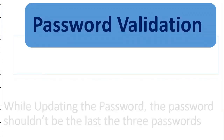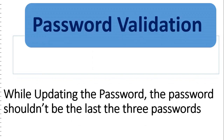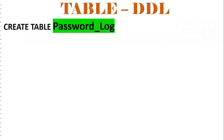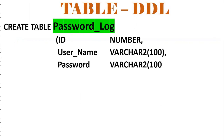The next requirement is password validation. Whenever a user wants to update their password, we need to enforce a condition: the new password should not match any of the last three passwords. To implement this, we need to create a password_log table to store password history — columns: ID, username, password, and inserted_date.